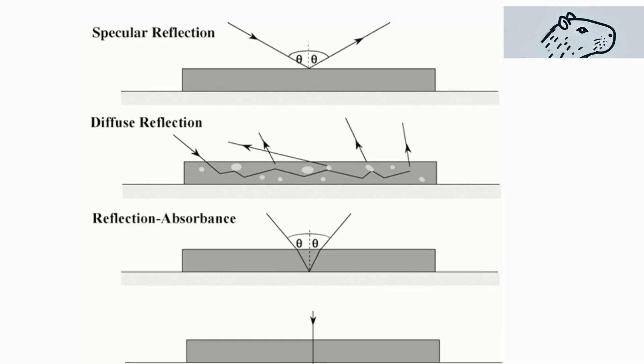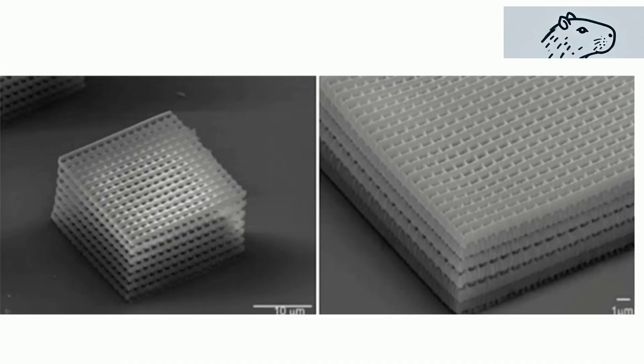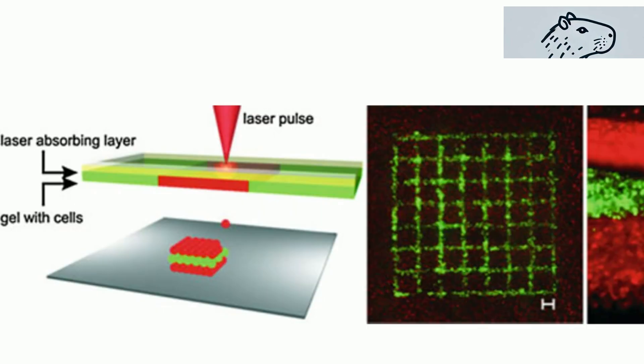Our comprehensive study covers the principles of light scattering, including Rayleigh and Raman scattering. We delve into how these scattering events occur and their relation to molecular vibrations and electronic transitions.